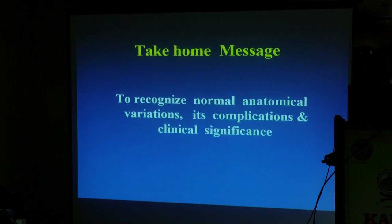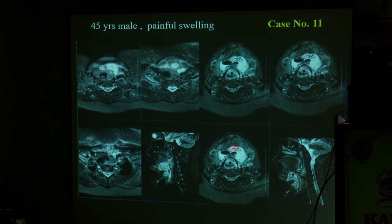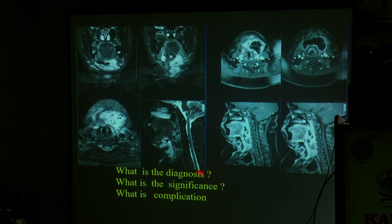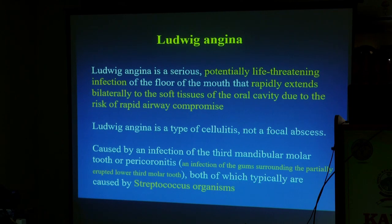Case number eleven: painful swelling — an expanding lesion with enhancement and air pockets. The diagnosis is Ludwig's angina. It can present with painful swelling in the submandibular region — classically Ludwig's angina. It is a life-threatening condition — you have to make the diagnosis because the inflammatory process in the oral cavity rapidly extends, causing rapid airway compromise. This is usually a cellulitis or focal abscess caused by streptococcal infection.